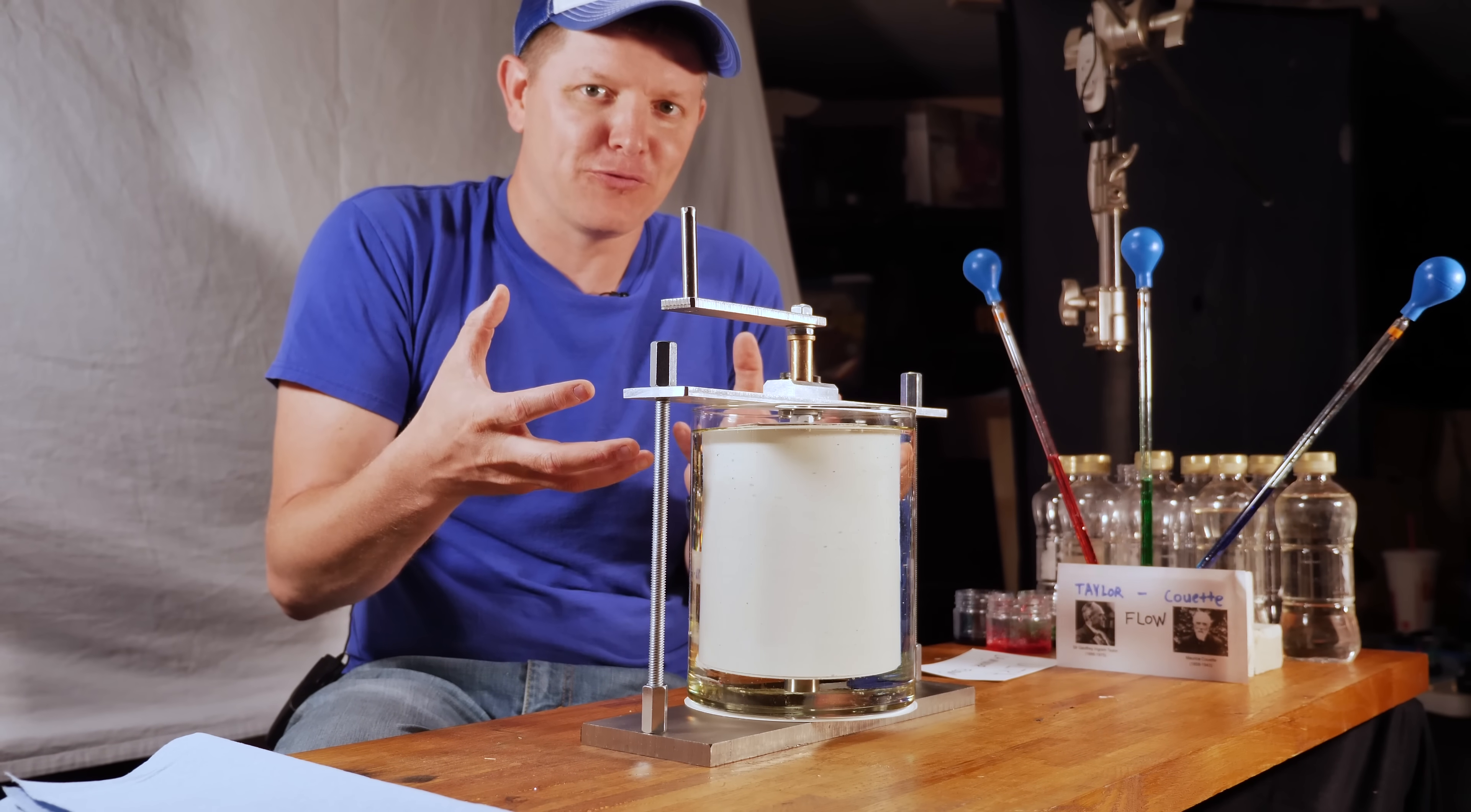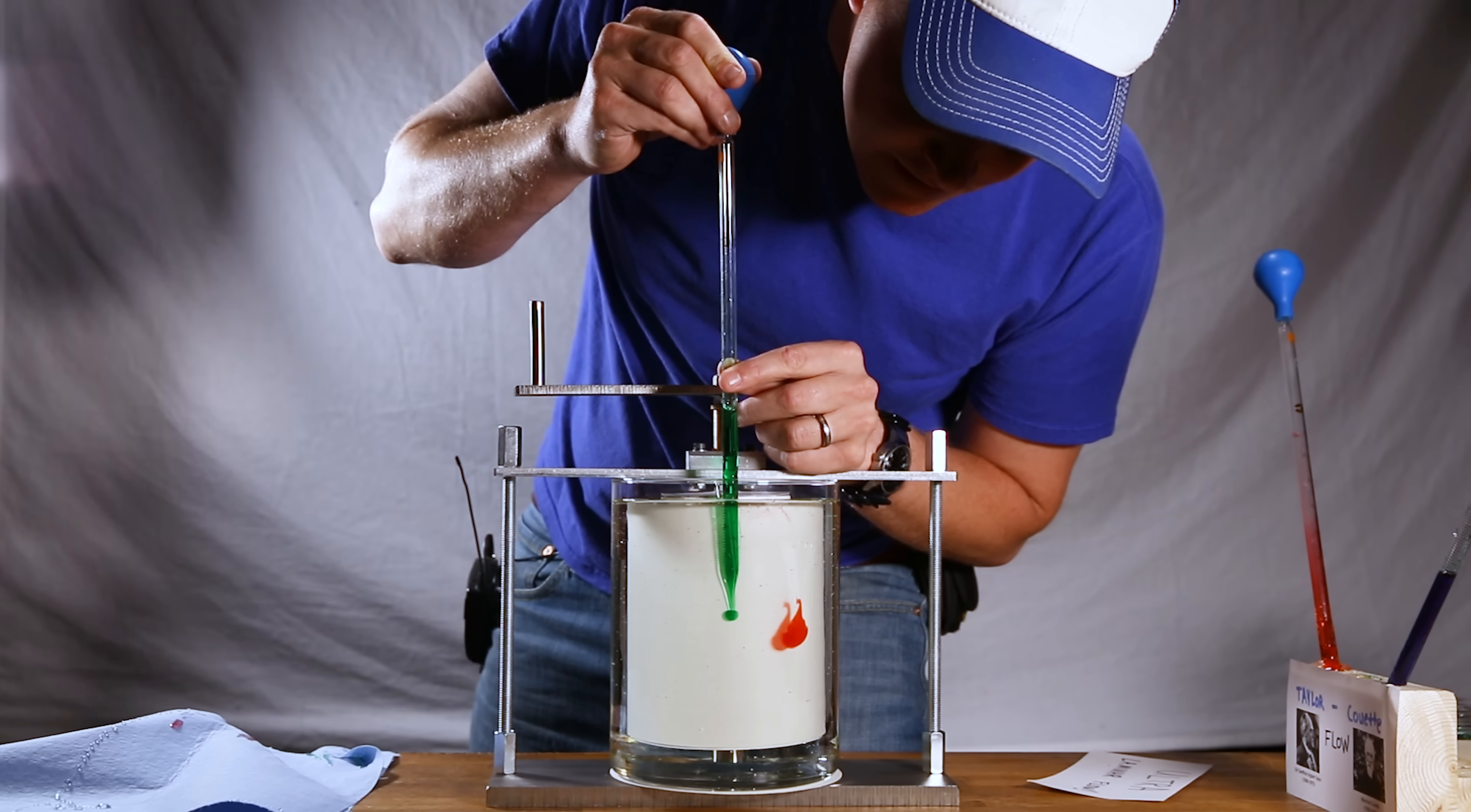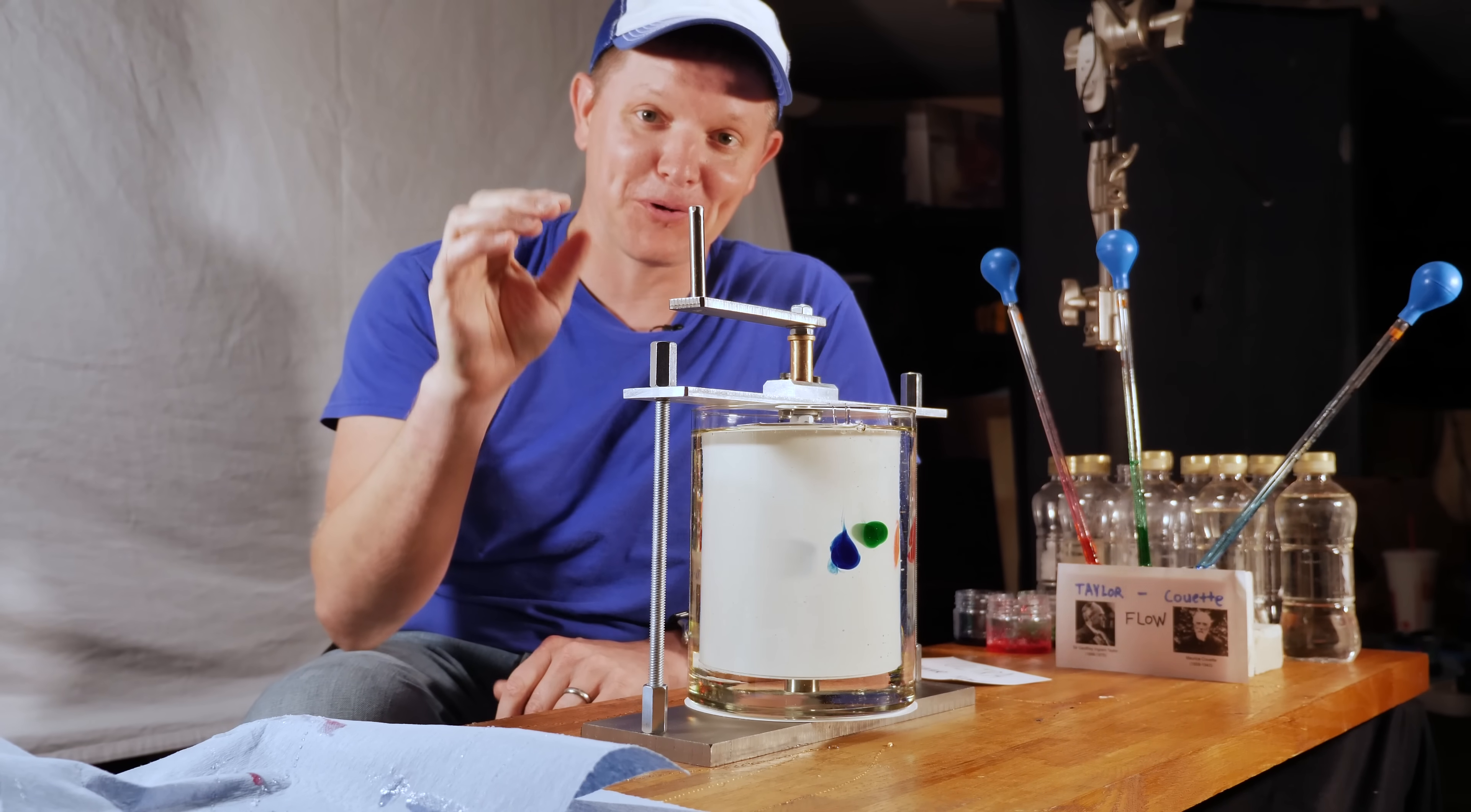So what we're gonna do is we're gonna put this colored corn syrup in there and because we have such a low Reynolds number here, that's laminar flow, and it should be reversible. Okay, so as I put this color in here, I want to recommend something. What you're about to see is absolutely incredible and you're only gonna get to unwrap this present once. So if you would please trust me and don't fast forward this video.